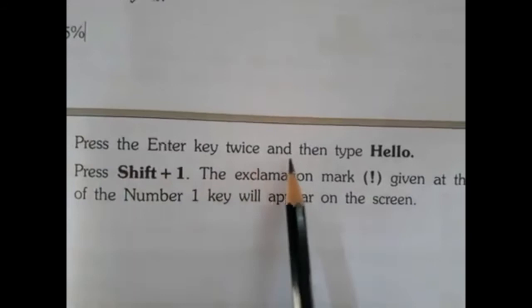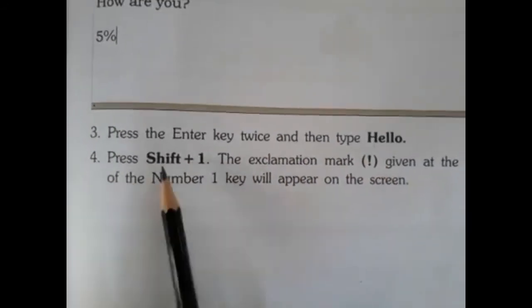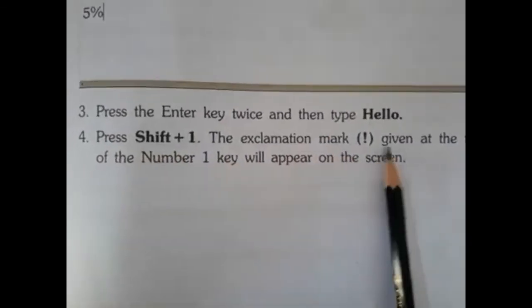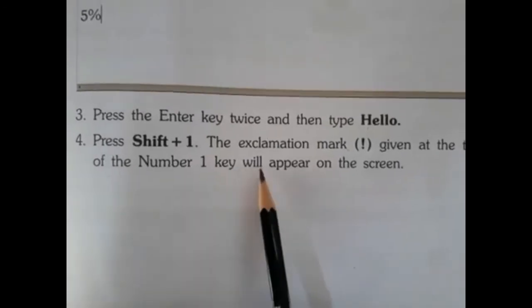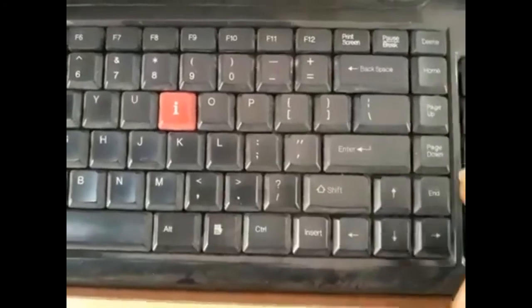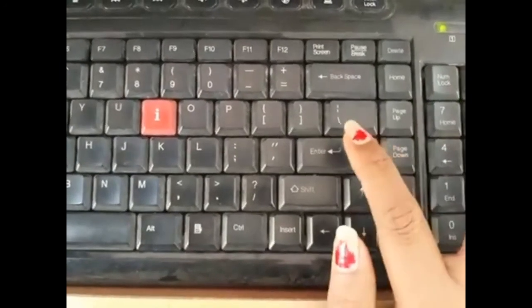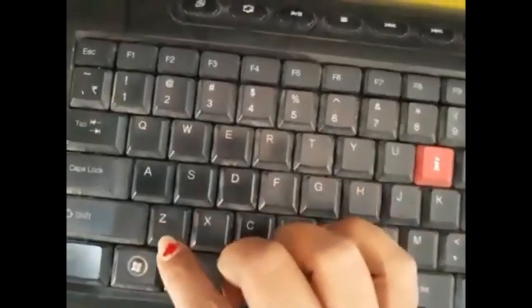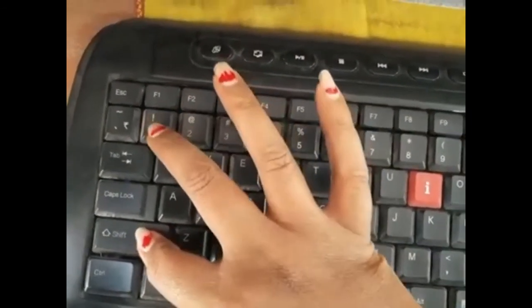Step three: press the Enter key twice and then type 'hello'. Step four: press Shift plus 1 — the exclamation mark given at the top of the number 1 key will appear on the screen. Keyboard se Enter key do baar press karenge — one and two. Ab yahan se 'hello' type karenge: H, E, double L, O — hello type kiya. Uske baad Shift key ke saath number 1 key press karni hai. Humne press kar diya — so hello ke peechhe exclamation mark aa gaya.